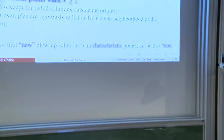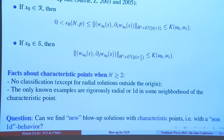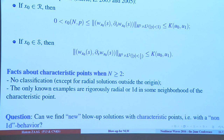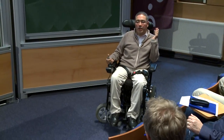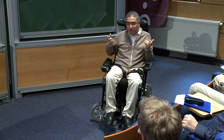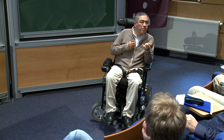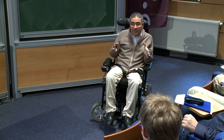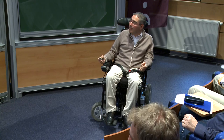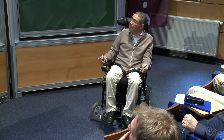We have no classification of characteristic points in higher dimensions. In 1D, every characteristic point is isolated; here, no result. For examples: if you ask whether we can construct a solution with a characteristic point, I can take a 1D solution and make some truncations. In 2D, this gives a solution having a line of characteristic points, or with radial solution, a characteristic set which is a sphere. But this is always rigorous 1D behavior. We have no other examples. The question is: can we find new blow-up solutions with characteristic points with a non-1D behavior?